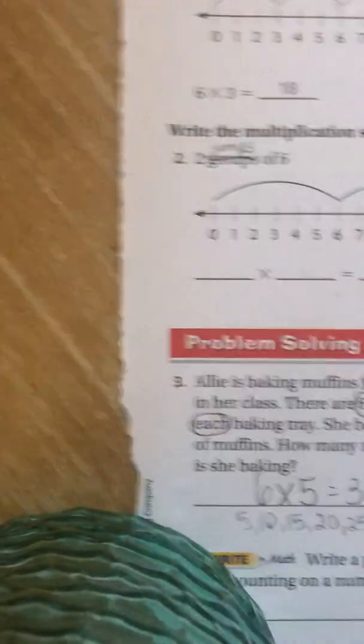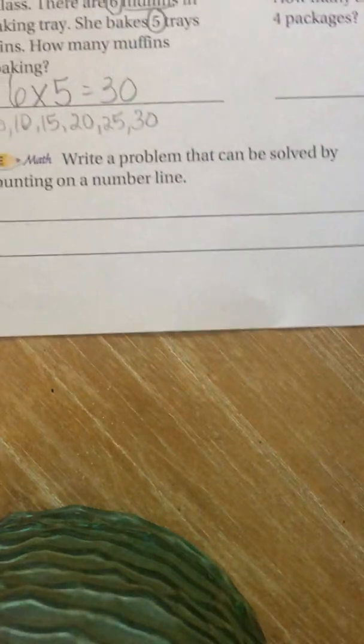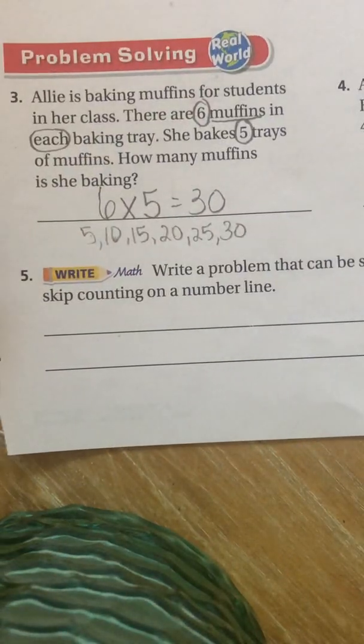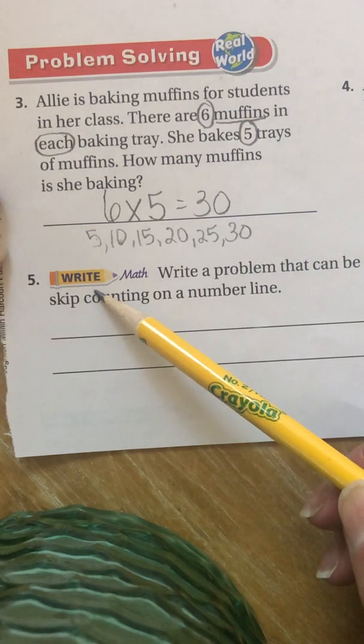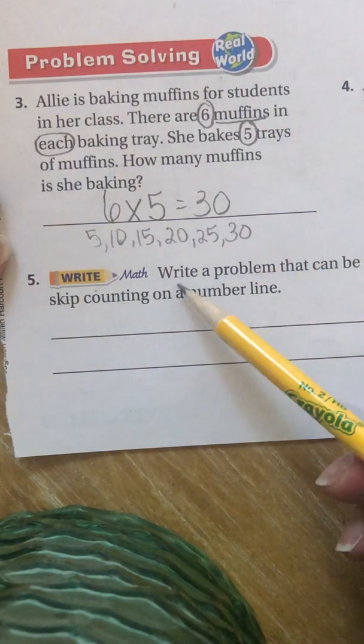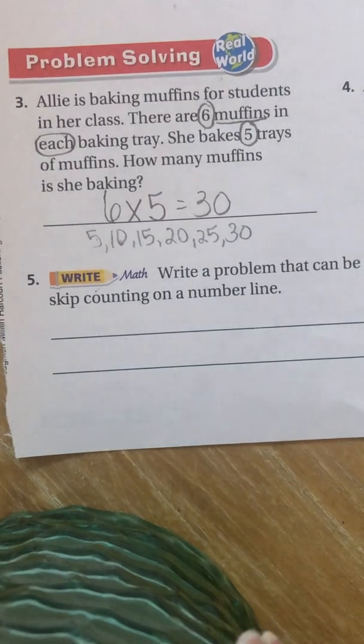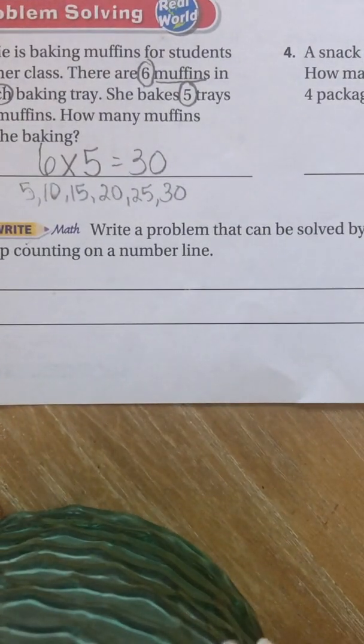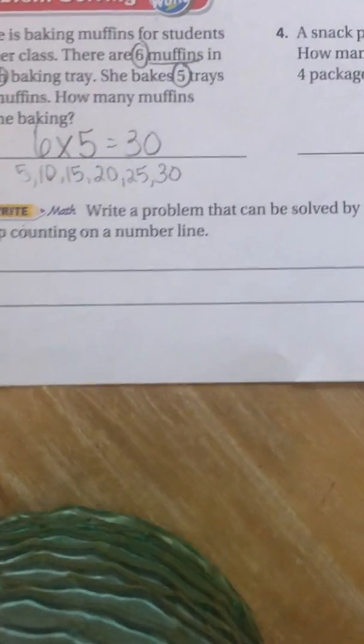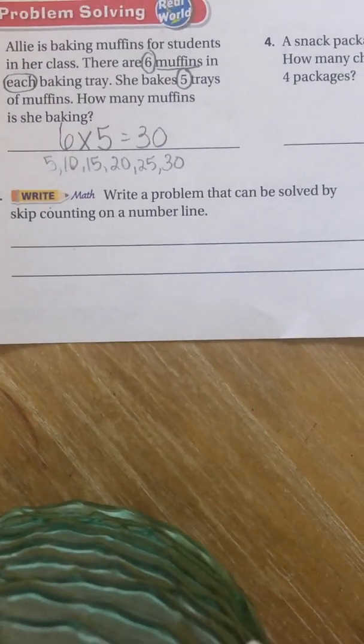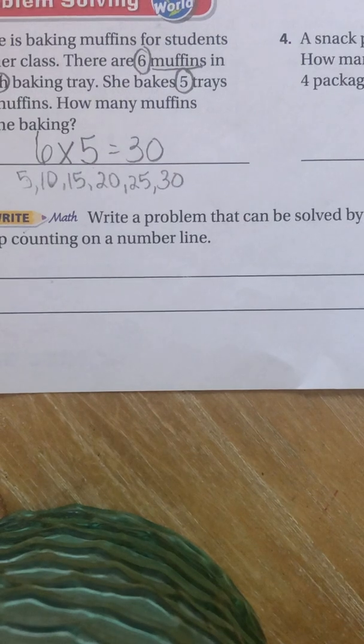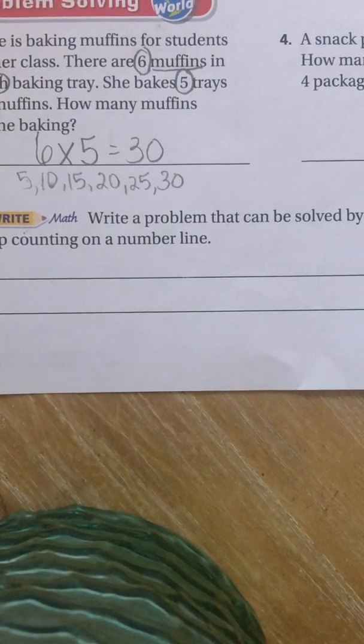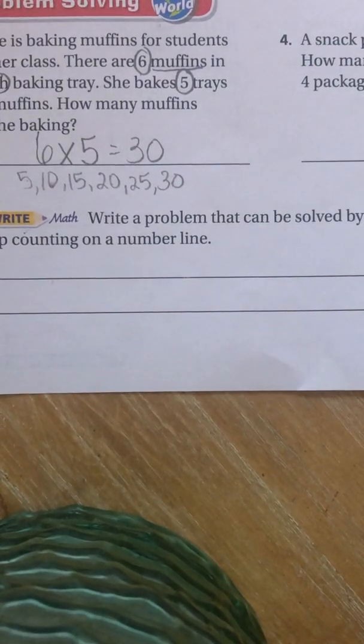Now at the bottom, I always do the bottom with you where it says write for math. So whenever you see that pencil, I am going to always help you with that problem. It says write a problem that can be solved by skip counting on a number line. So all we have to do, boys and girls, is write a problem and use a number line as our strategy to help us find our answer.